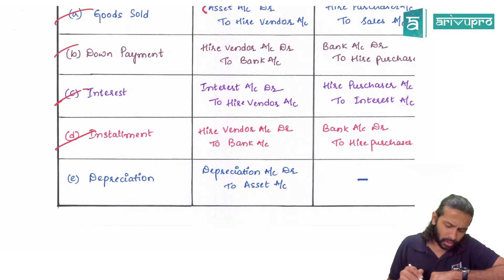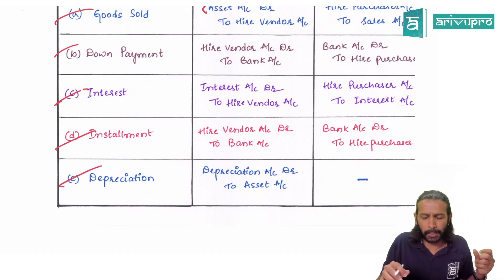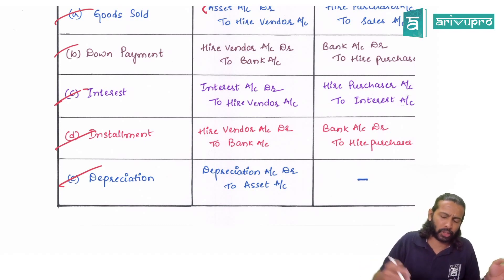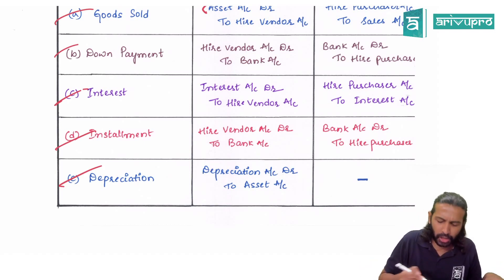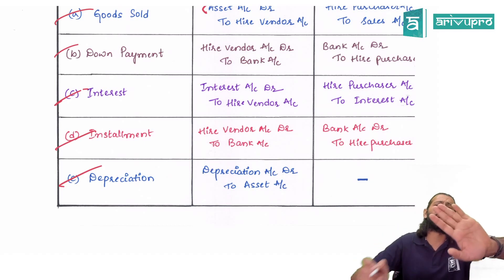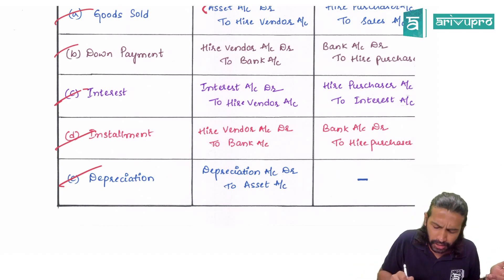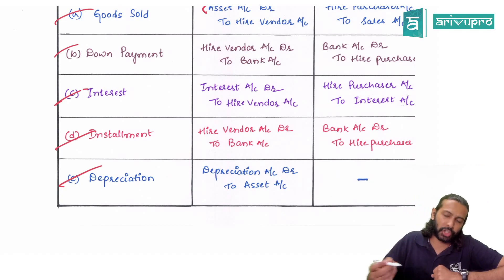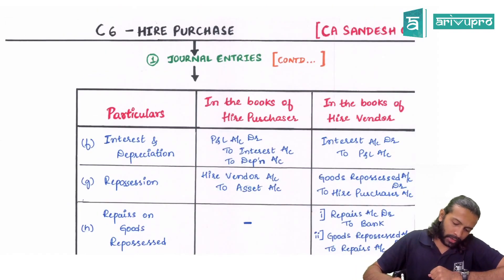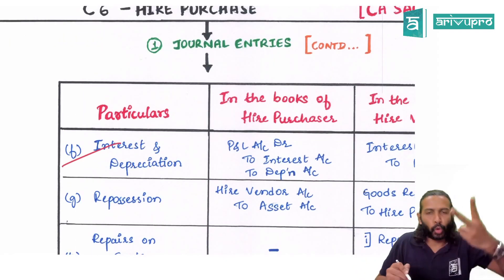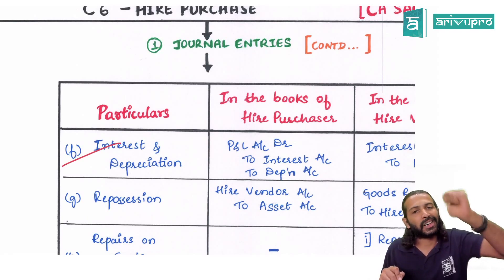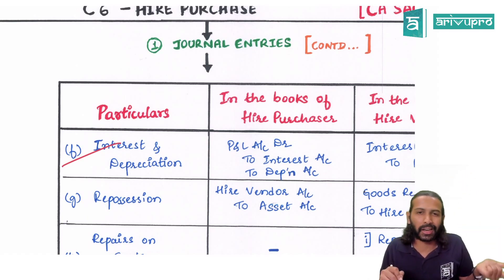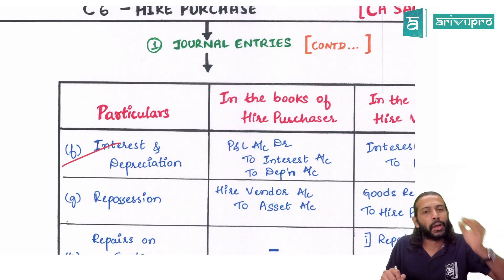Since the hire purchaser purchased a fixed asset, it may need to be depreciated. The journal entry is Depreciation Account debit to Asset Account; or if maintaining a provision for depreciation, Depreciation Account debit to Provision for Depreciation. Two expenses exist for the hire purchaser: interest and depreciation. Interest is paid; depreciation is a non-cash expense. Both are transferred to P&L. The transfer entry is P&L Account debit to Interest and Depreciation.